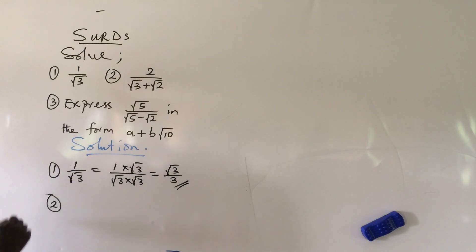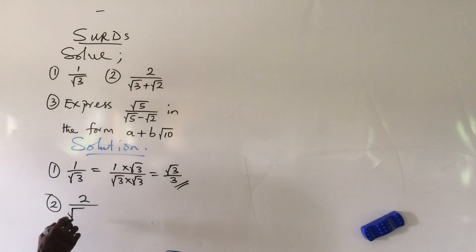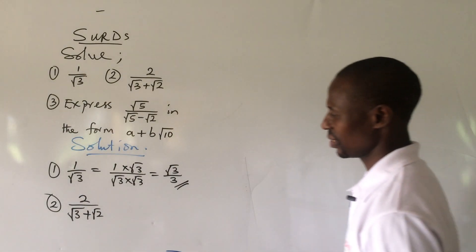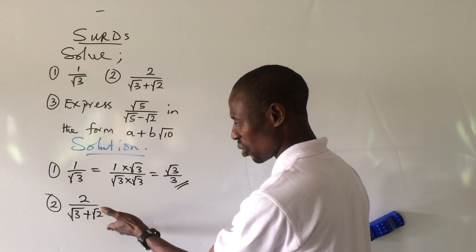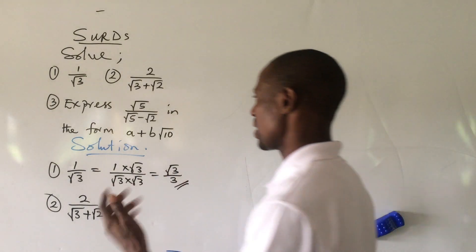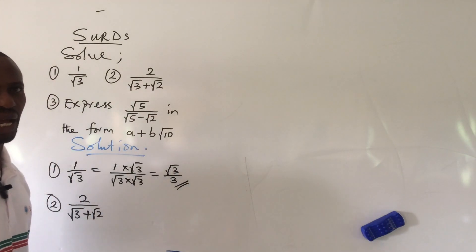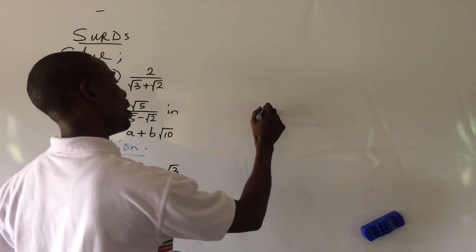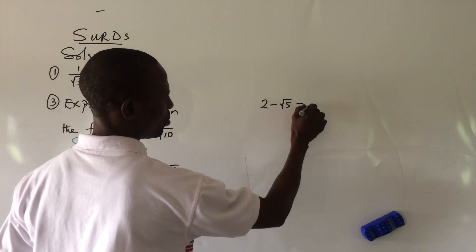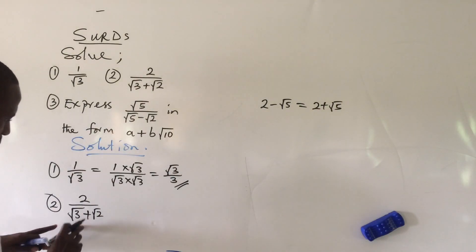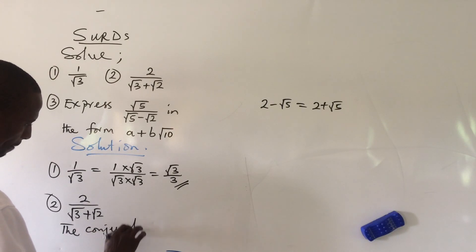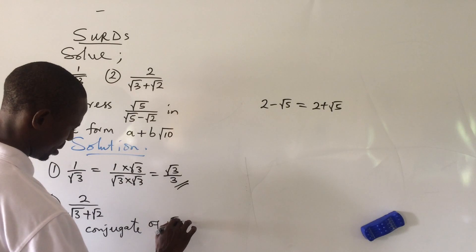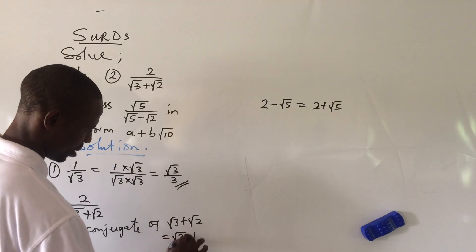For question two, we have 2 over root three plus root two. Looking at the denominator, we are having root three plus root two, so we multiply the numerator by the conjugate of the denominator and the denominator by its conjugate. In the rules of surds, the conjugate of two minus root five is two plus root five. So the conjugate of root three plus root two is root three minus root two.